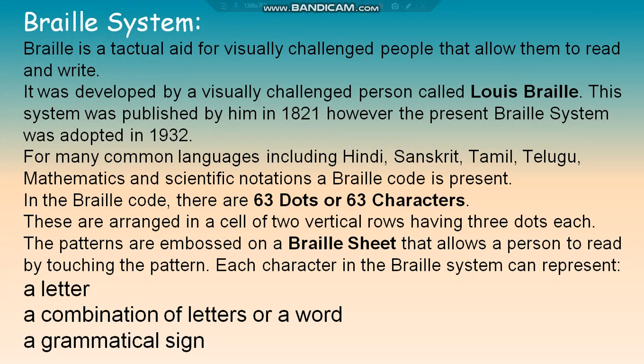In Braille code, there are 63 characters arranged in a cell of two vertical rows having three dots each. The patterns are embossed on a Braille sheet, allowing a person to read by touching the pattern. Each character in the Braille system can represent a letter, a combination of letters, a word, or a grammatical sign.